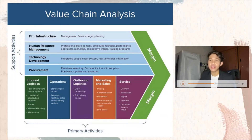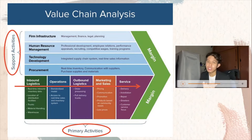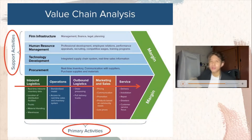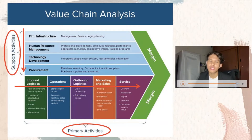Porter's value chain analysis consists of two types of activity: primary activities and supporting activities. Primary activities are the day-to-day operations we see in an organisation, consisting of inbound logistics, operations, outbound logistics, marketing and sales, and service. Support activities act as the backbone for the primary activities to ensure the effectiveness and efficiency of the whole business operation. Support activities consist of firm infrastructure, human resource management, technology development, and procurement. All of these support and primary activities co-exist with each other to ensure that the profit margin of the organisation can be obtained.